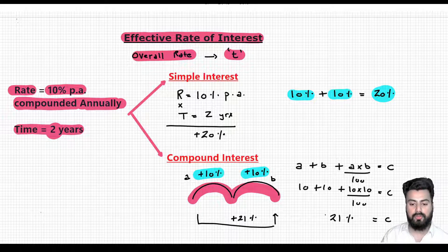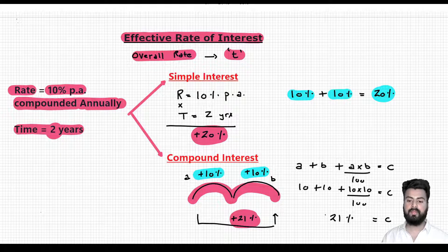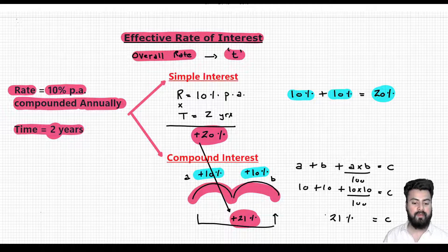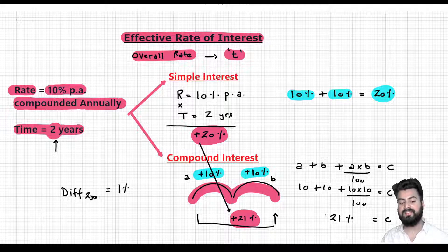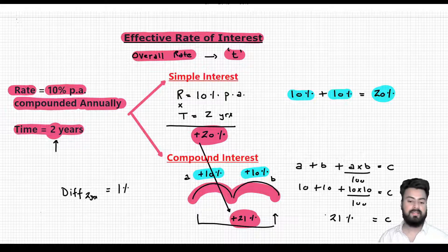Now I want you to look at the two values of effective rate of interest. In SI it is 20% per annum while in CI it is 21% per annum. If you compare the two values, CI is more rewarding than SI. In case of CI I am getting 1% extra. So this 1% is nothing but the difference between SI and CI for two years. And this is something which I am going to use in many questions of simple and compound interest. I hope through this you were able to understand what effective rate of interest is and how to do the calculation in both cases.